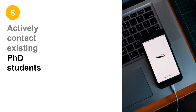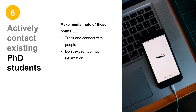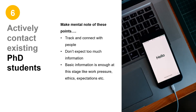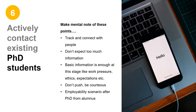Point number six. After getting some basic information, a very important step is to contact the existing students, which many aspiring PhD students somehow don't think of in the first place. In this age and era, it should not be difficult to track down and connect with people working in the department of your choice. But do remember, please do not expect too much information. At this stage, basic information is enough, like work pressure, ethics, role of supervisors in PhD, etc. Please be courteous to them, don't push, and try to be professional in your conversations. You can even try and contact recently passed out students to gather information on post-PhD employability scenarios.